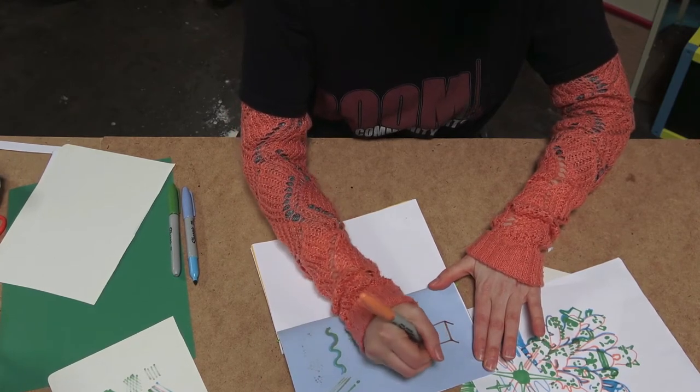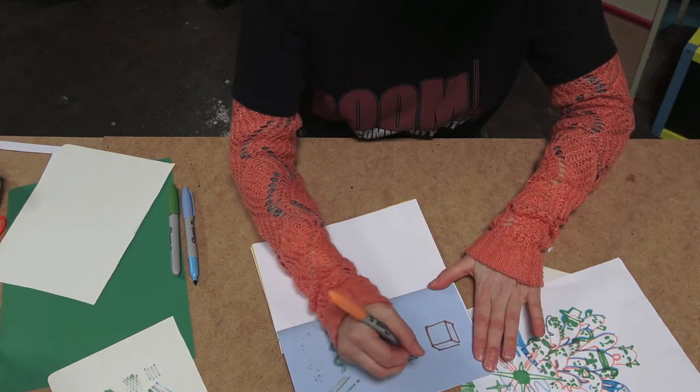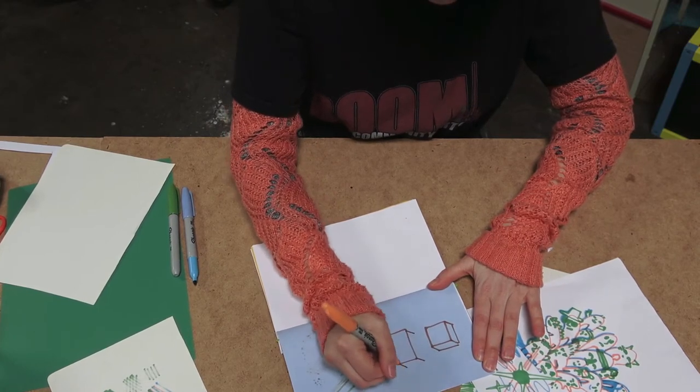You just draw the square and you draw the three lines diagonally and then you join them and connect those.